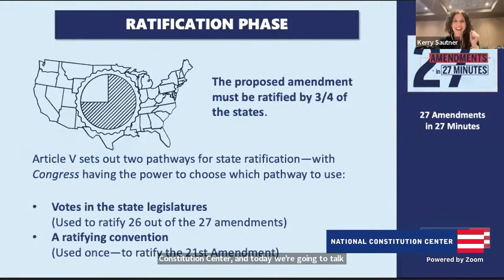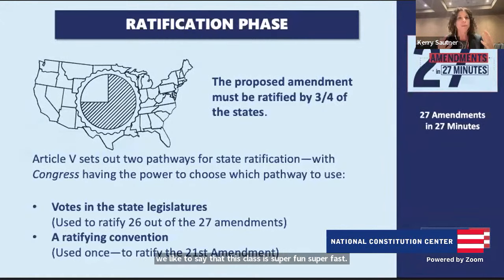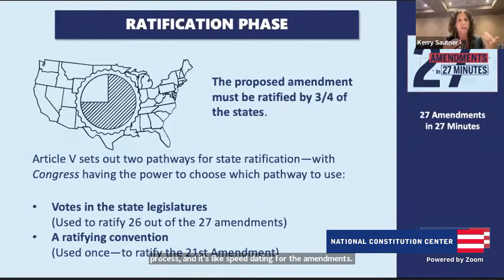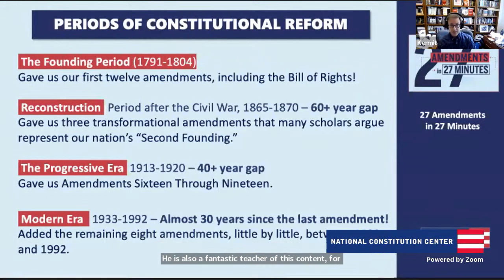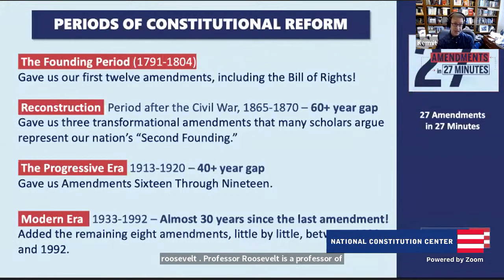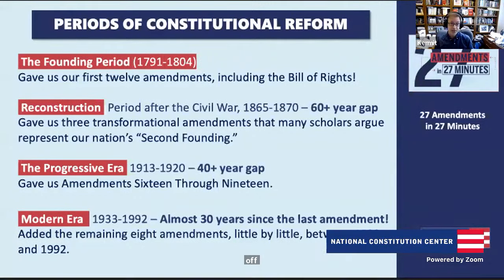Constitutional change comes in bursts, reflecting big changes in the national mood. During the founding period, we got our first 12 amendments — fixing a couple of mistakes and adding the Bill of Rights, which protects individuals against the federal government. The theme is: the federal government is dangerous, the states are the good guys. Then we get to Reconstruction, and things flip — now the federal government is good and the states are bad. We get limits on states, more federal power, and an expansion of voting rights.